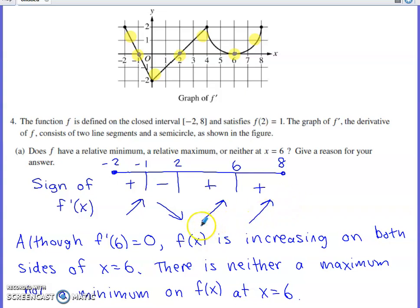Now what's happening at 6? We're positively sloped to the left of 6 for f of x. We're positively sloped to the right of 6 for f of x. So although f prime of 6 is equal to 0, the function is increasing on both sides of x equals 6, and that tells us that we have neither a max nor a min on f of x at this x.